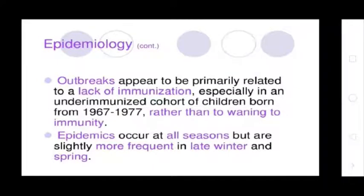Outbreaks appear to be primarily related to lack of immunization, especially in an under-immunized cohort of children born from 1967 to 1977, rather than to waning immunity. Epidemics occur in all seasons but are slightly more frequent in late winter and spring.